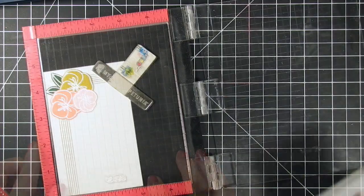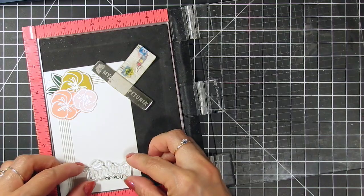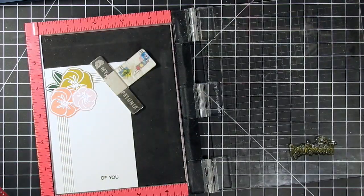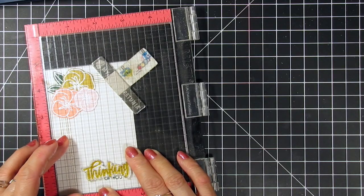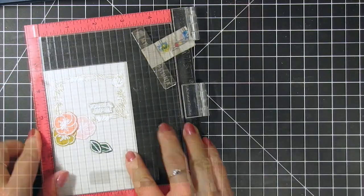For the second card in the same layout I stamped the secondary sentiment in evergreen and the main sentiment in stardust. As I finish the rest of the cards I vary the colors of ink to create different sentiments.